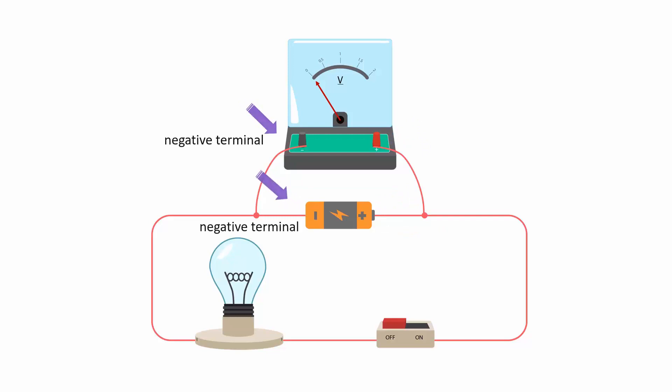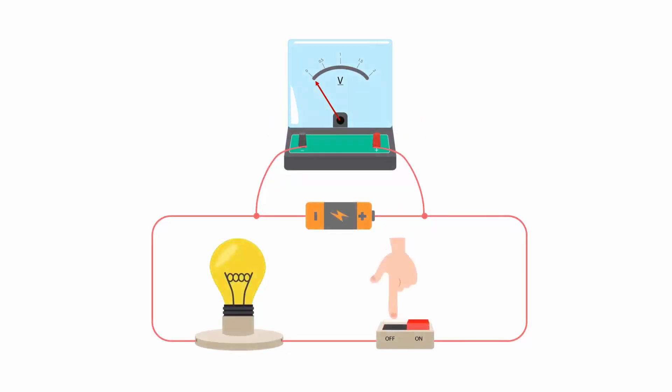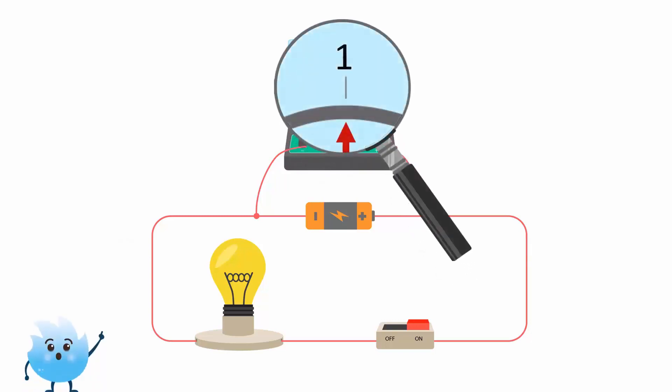Just like an ammeter, the positive terminal of the voltmeter can be identified by a red color and the negative terminal by a black color. When the switch is closed, the deflection of the needle shows the voltage across the circuit. The potential difference in the circuit is one volt.